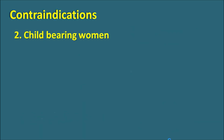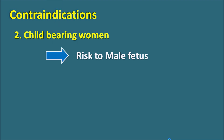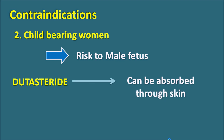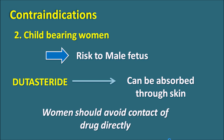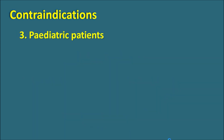The second contraindication is child-bearing women. Similarly, this drug can produce risk to the male fetus, so it is contraindicated. Dutasteride can also be absorbed through the skin, so handling of this drug is very important for women, who should avoid direct contact with it. The third contraindication is pediatric patients, in whom this drug can reduce the growth of genitalia and reproductive tissues.